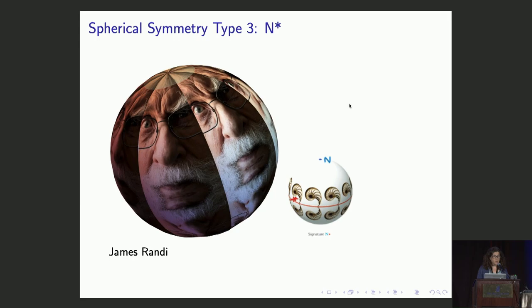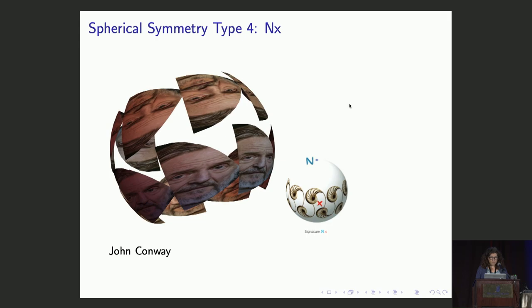And if we switch out the mirror line at the equator for a glide reflection line, we get N-x symmetry, shown by John Conway.